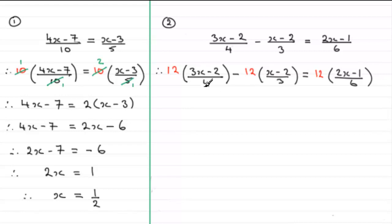Now we picked 12 because the 4, the 3 and the 6 will divide cleanly into it. So 4 into 12 goes 3 times. 3 into 12 goes 4, and 6 into 12 goes twice. So we don't have any fractions anymore. We've just got 3 multiplied by (3x minus 2), minus 4 multiplied by (x minus 2), and for the last term we've got 2 multiplied by (2x minus 1).